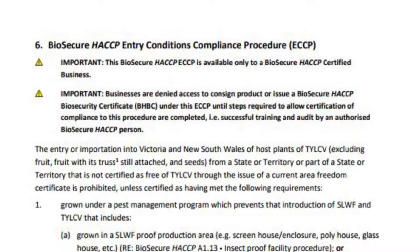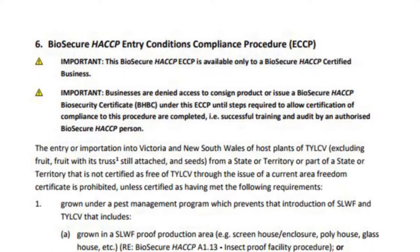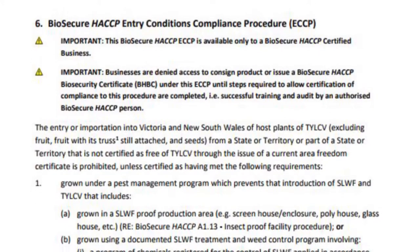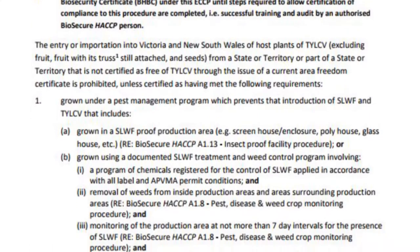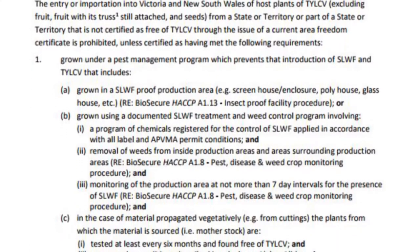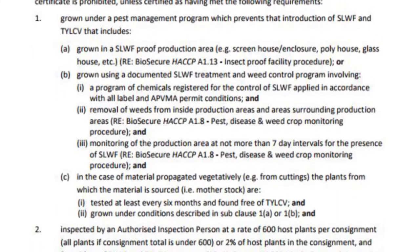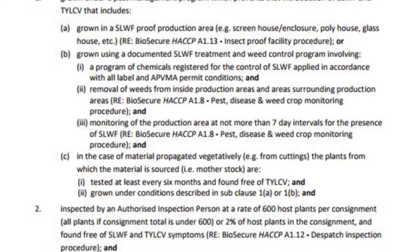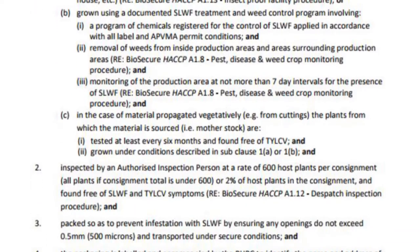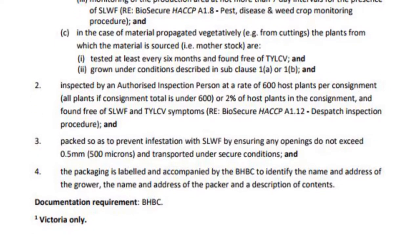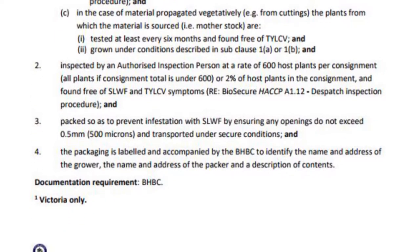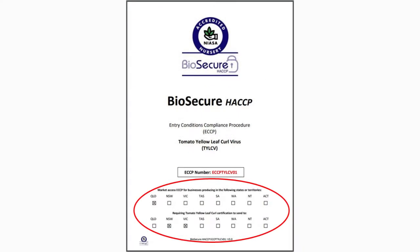The last sub-section, Biosecure HACCP Entry Conditions Compliance Procedure, outlines the actual compliance procedures that must be met for a consignment covered by this ECCP. Note, the compliance procedures can be different for each pest and jurisdiction. If you do not meet any conditions listed here, you cannot ship a consignment to the jurisdictions identified on the front page of the ECCP.